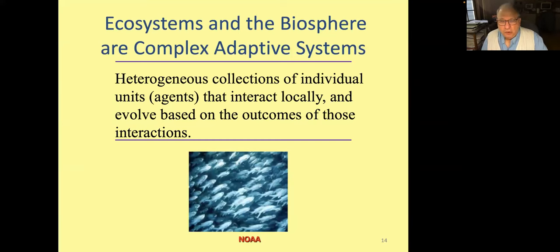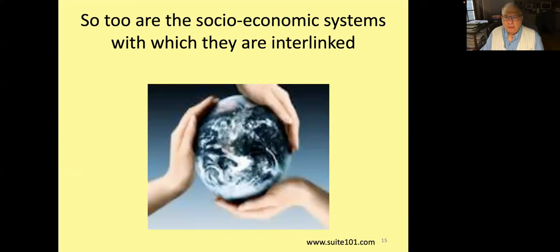Ecosystems and the biosphere, the things I work on, are complex adaptive systems. That means they're heterogeneous collections of individual agents that interact with each other locally and evolve. I don't mean in the genetic sense, necessarily. They change - this is the mathematical sense - based on the outcomes of this interaction, but it could be behavioral changes.